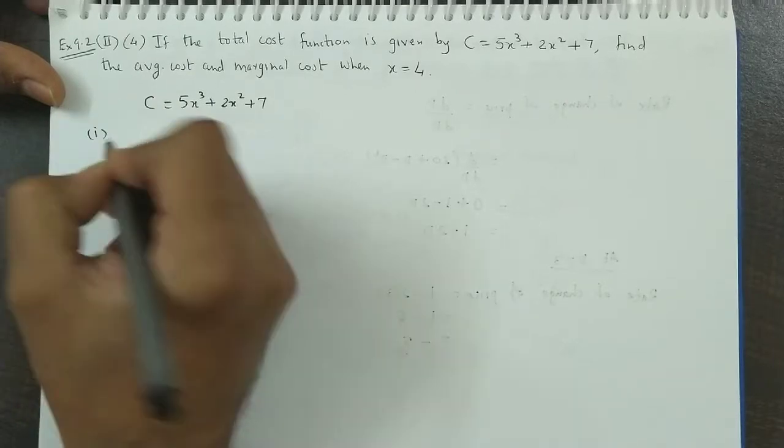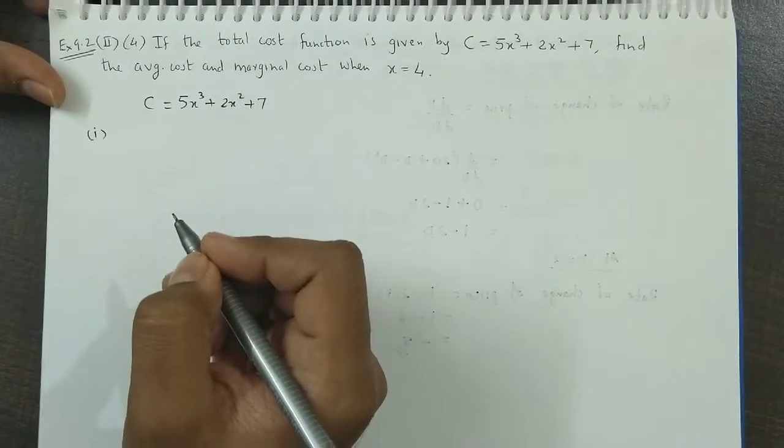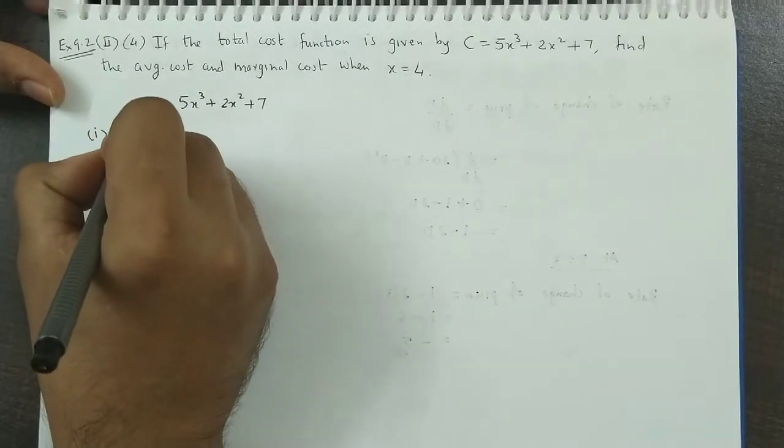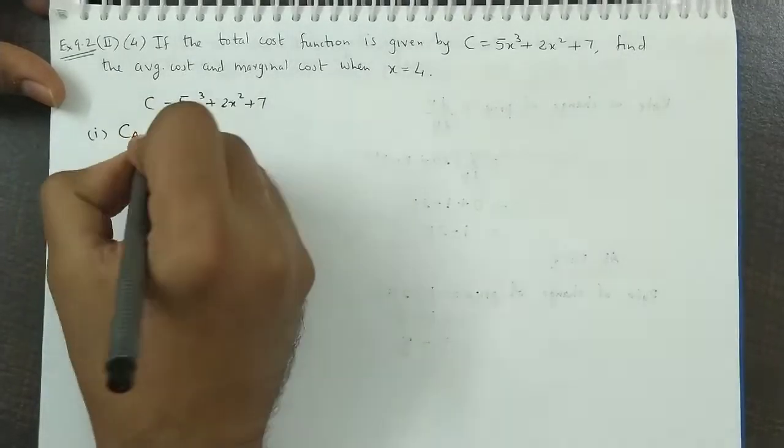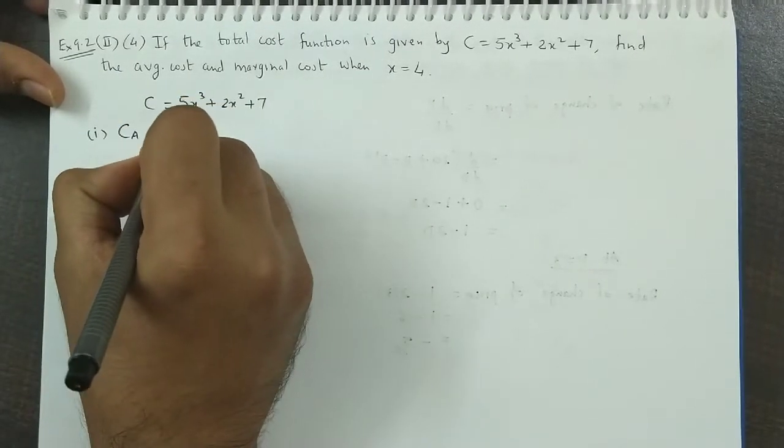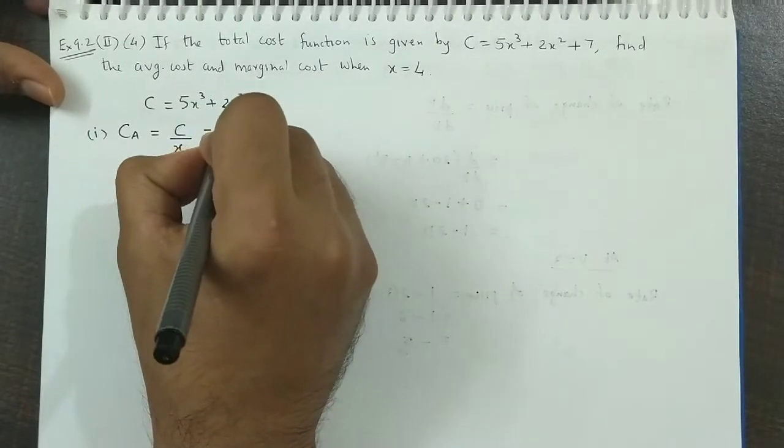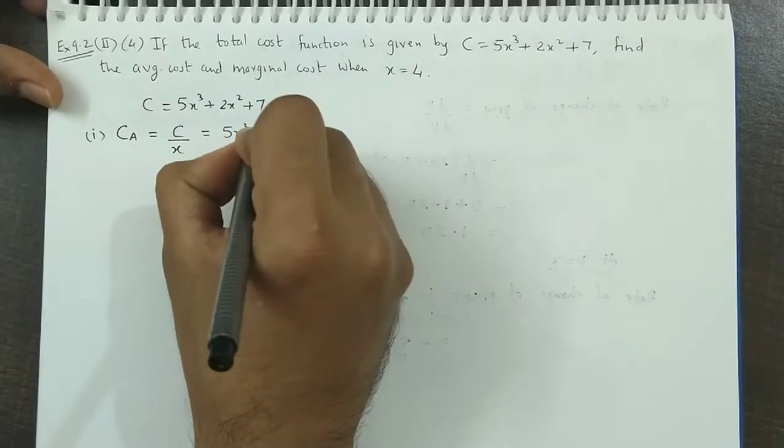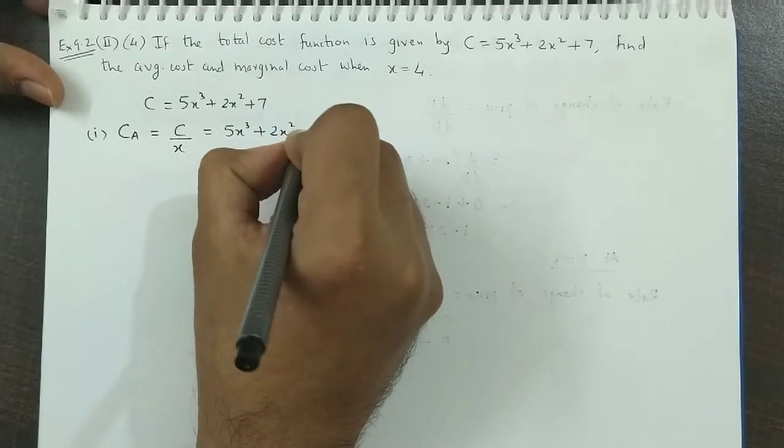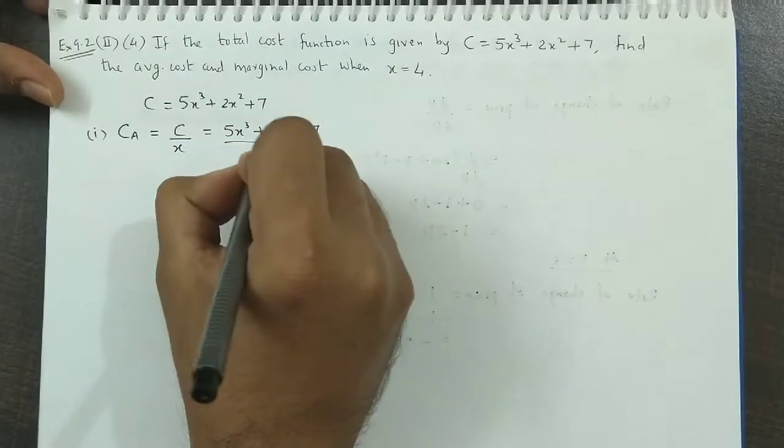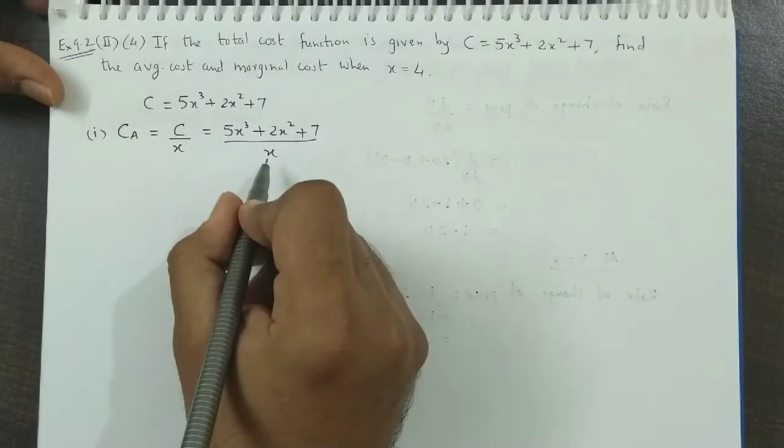So first we look at average cost per unit. We denote CA. So average cost is nothing but C upon x, which would be (5x³ + 2x² + 7) divided by x. So this is the average cost.